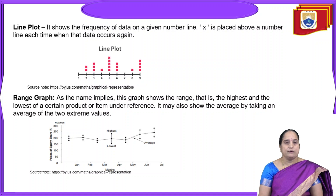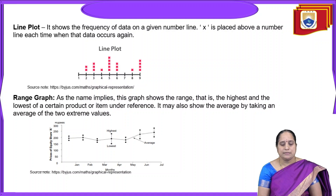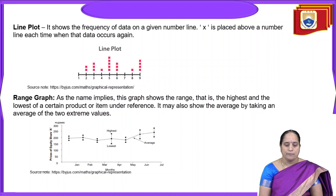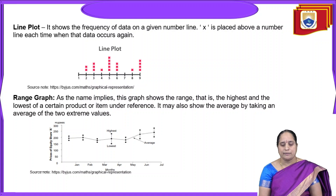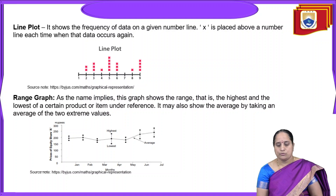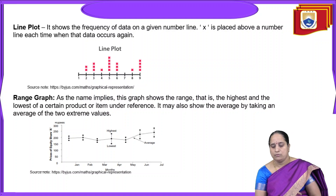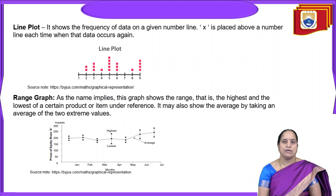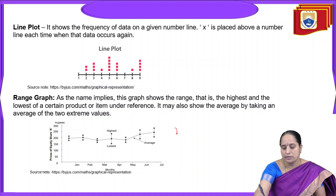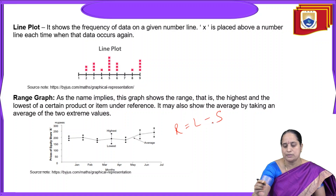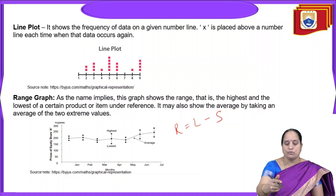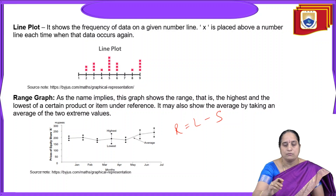The next type of graph is a range graph. As the name implies, this graph shows the range — that is, the highest and lowest — of a certain product or item under reference. It may also show the average by taking an average of the two extreme values. In simple terms, range is the difference between the largest value and the smallest value, and this difference is specified on a graph.